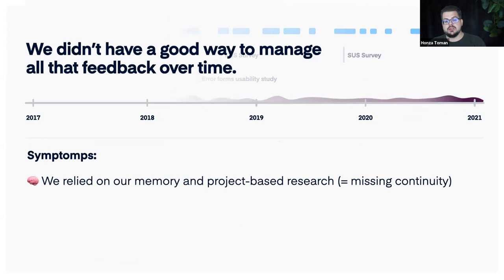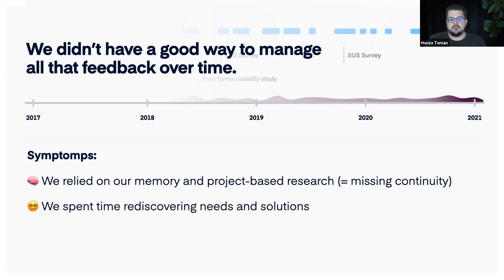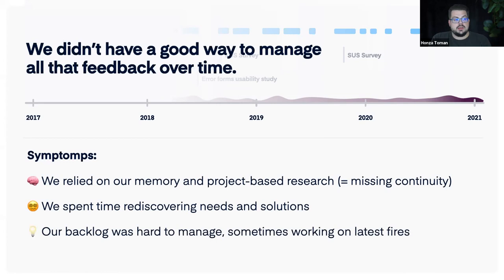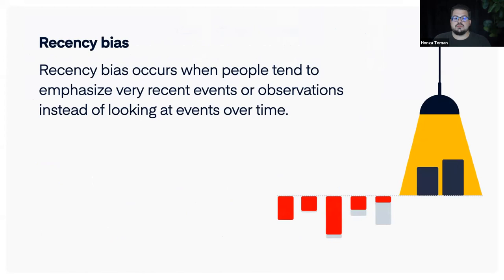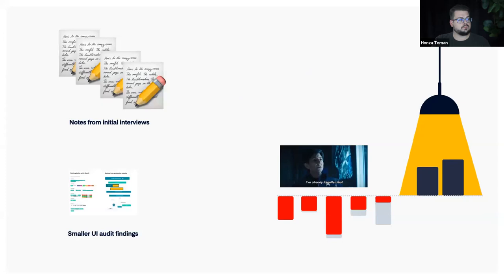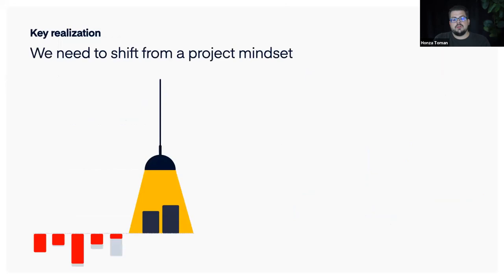The symptoms were obvious: we relied on memory and past research, missed continuity, spent time rediscovering needs and solutions we had already found, and our backlog was hard to manage — we were working on whatever was loudest. This is all related to a known bias called recency bias, which appears when people emphasize recent events instead of looking at events over time. All those notes from initial interviews were lost; all the smaller and larger UI audit findings were forgotten.